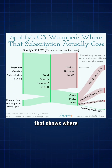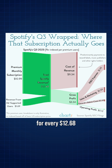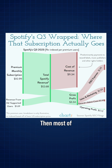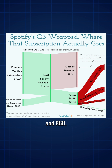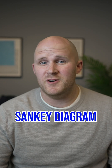Take a look at this chart. It's a chart that shows where Spotify gets its money and how it spends it. According to the chart, for every $12.68 of revenue, Spotify spends $9.34 on payments to musicians and record labels. Then most of the rest is split between various operating costs like marketing and R&D, with the final $12 left over as operating profit. This type of chart is called a Sankey diagram, and they're great for showing the flow of things like money or energy.